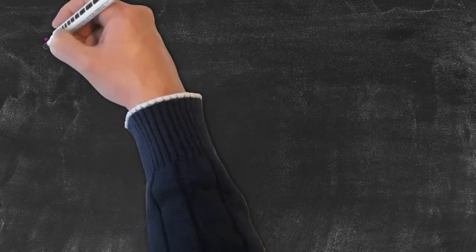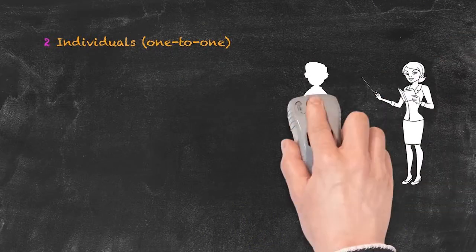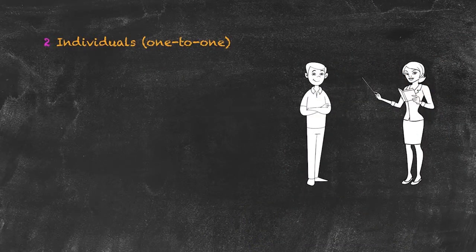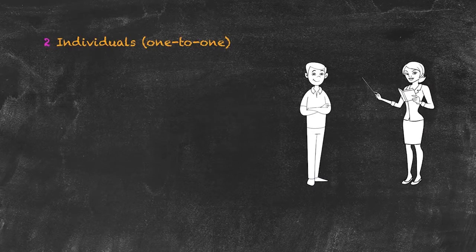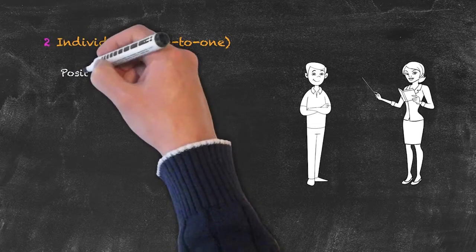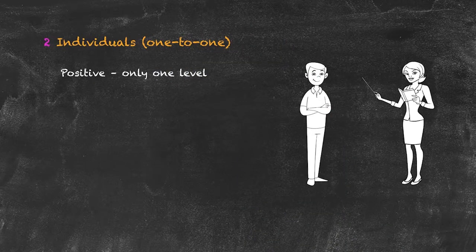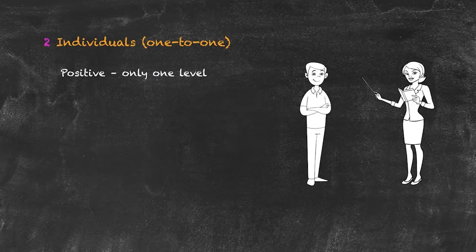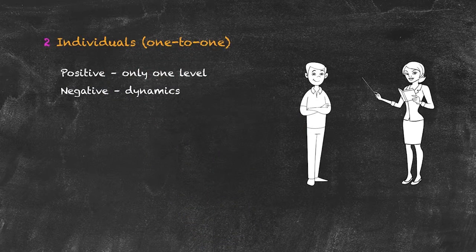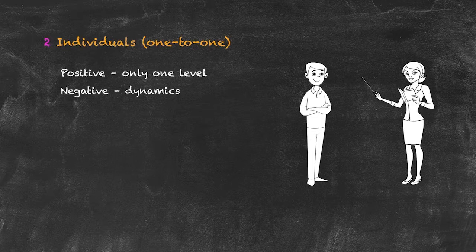The next category is individuals, also known as one-to-one teaching, which forms a very large part of the ESL teaching market. The main positive is that with only one student, you're always working at one level — no mixed ability. The main potential negative is that there is very little dynamic with only two people, meaning the teacher must often become actively involved in the lesson process itself.